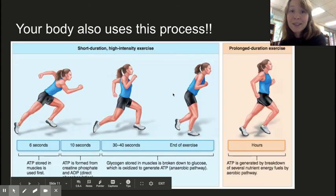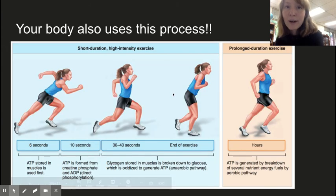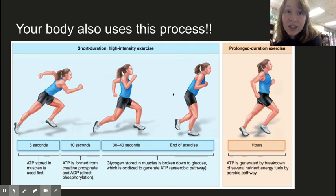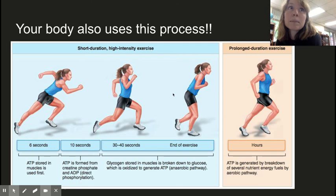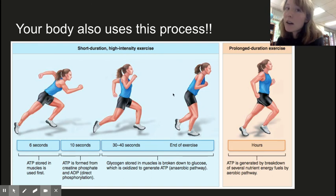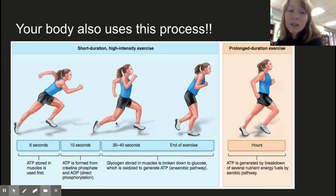Your body also uses this process. Runners may have heard of lactic acid buildup — when your body does not have enough oxygen, it uses lactic acid fermentation to make as much ATP as possible. If you start sprinting suddenly, the oxygen in your lungs hasn't reached your muscle cells yet, so your muscle cells use lactic acid fermentation to make enough ATP.